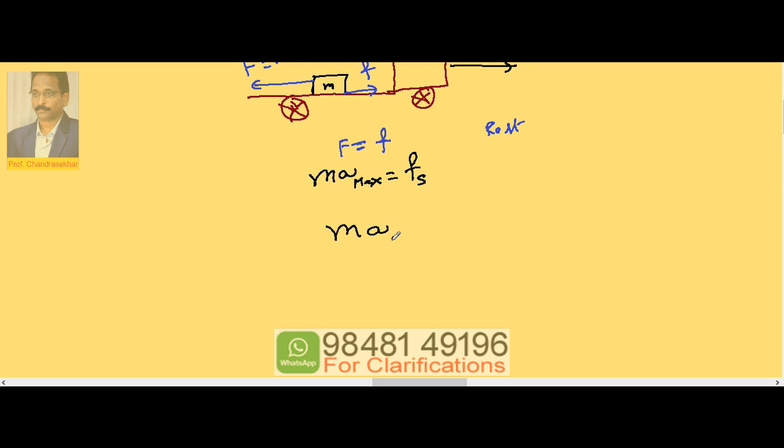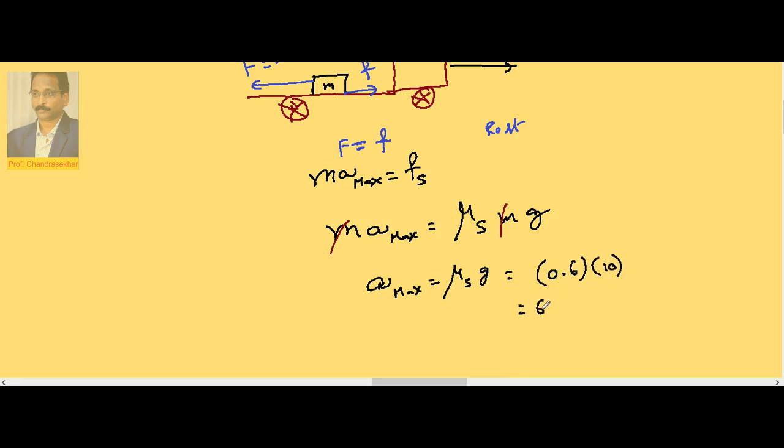Therefore, ma maximum is equal to μs into m into g. m and m gets cancelled. Therefore, the maximum acceleration of the truck up to which box will remain at rest is μs into g. μs is given as 0.6 and g is 10. So 6 m per second square.